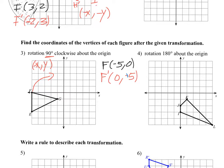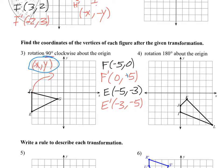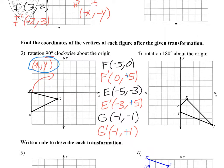Let's go to E. E is at negative 5, negative 3. So again, I switch my X and Y: negative 3, negative 5. Look at this quadrant — my X's are negative, that's good. My Y needs to be positive, so I have to change that Y to positive. Where's G? G is at negative 1, negative 1. So where's the new G? I switch them: negative 1, negative 1. Then look again — my Y has to be positive, so I need to make that Y a positive.